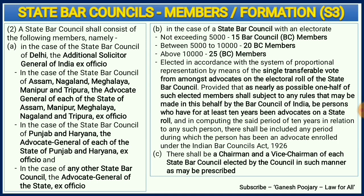Section 3(b) is very important because it discusses about the number of members in any bar council. If the total members are less than 5,000, the bar council will have 15 members. If the total number of members is between 5,000 and 10,000, the bar council will have 20 members. If the total members are more than 10,000, the bar council will have 25 members. They are selected by single transferable vote. Importantly, at least 50 percent of such elected bar council members should have more than 10 years of experience.